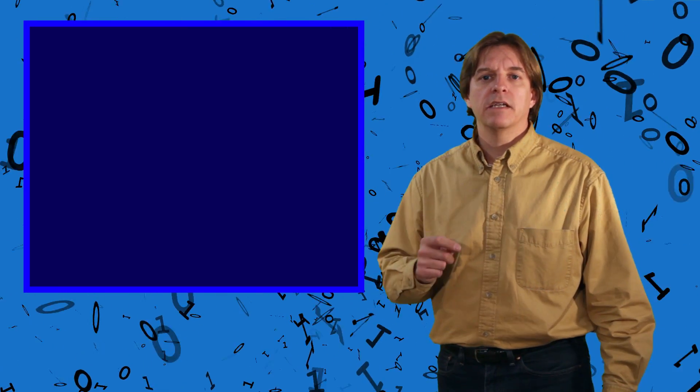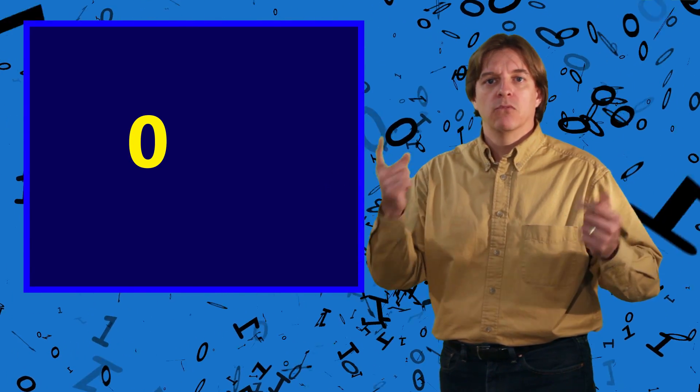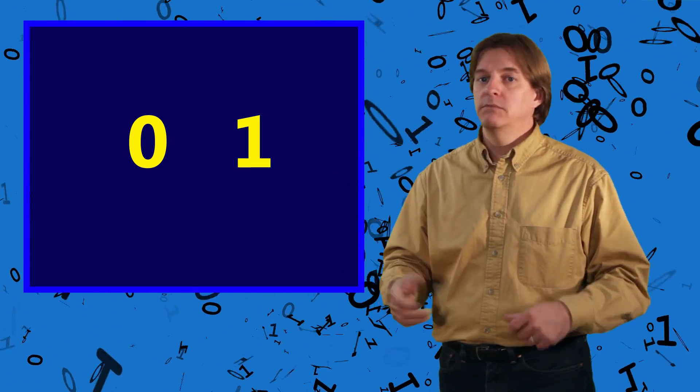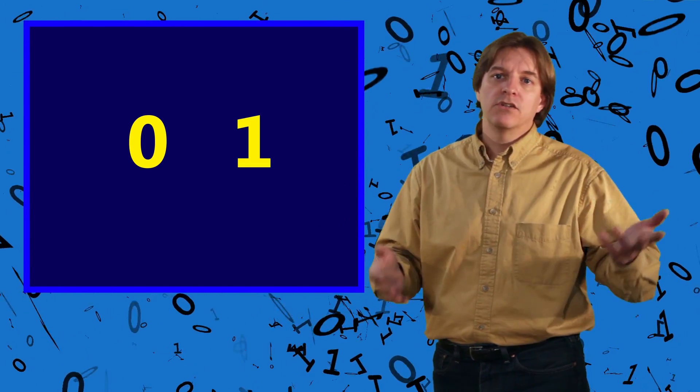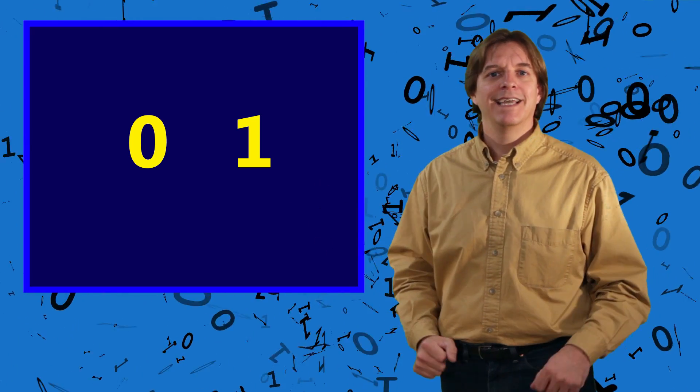As you're trying to get your brain around all this, let's talk specifically about today's topic: binary. Its base is 2, so all we have is 0 and one other digit, 1. That's it — 0 and 1, 1 and 0. Easy!